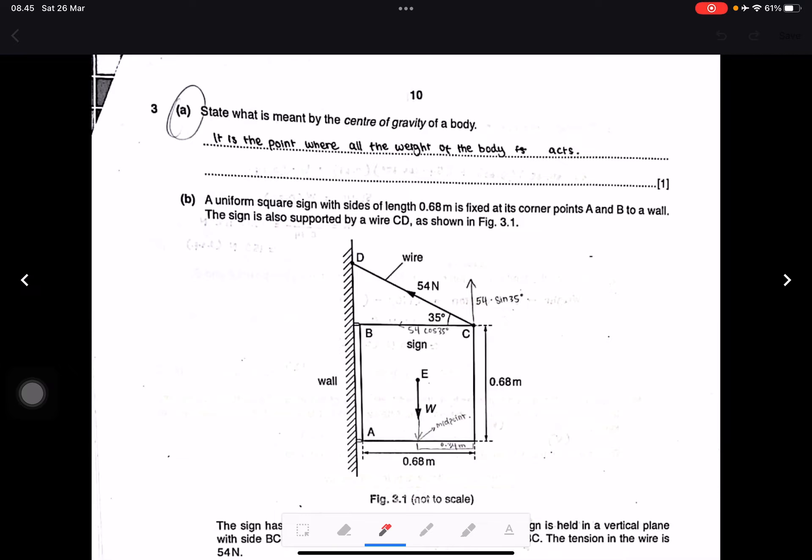We have about six numbers. This is number three. Question A: State the meaning of center of gravity of a body. It is the point where the weight of the body acts. Yes, correct.